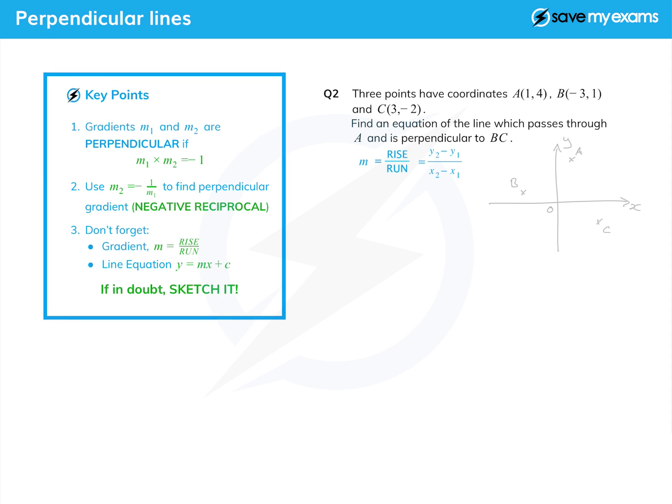We're told that the line passes through A and is perpendicular to BC. So there's BC and here is a line which is perpendicular to BC and passes through A. So this line is the one we want.